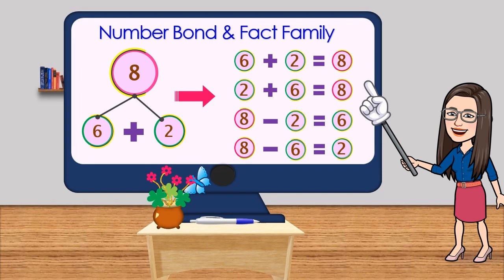Now let's explore number bond and fact family. The numbers that bond to 8 are 6 and 2, so we can combine 6 and 2 to make 8. Its corresponding fact family are: 6 plus 2 is equal to 8,